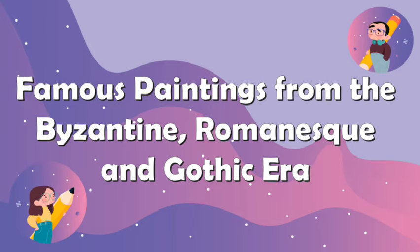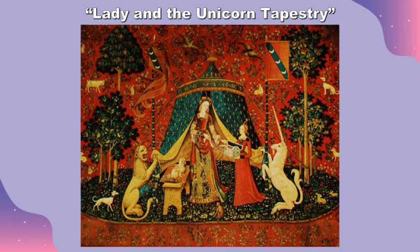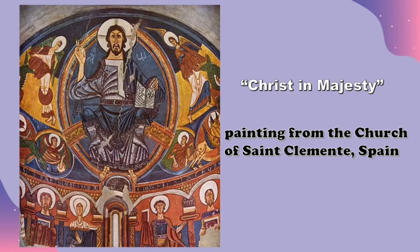Here are some paintings from the Byzantine, Romanesque, and Gothic era. The first is called The Shepherd David, which shows realistic details and naive naturalism. Second is Lady in the Unicorn Tapestry — subjects depict popular legends and love stories, with patterns like Mille Fleurs or Thousand Flowers showing influence possibly due to the Crusades. The last is Christ in Majesty, a painting from the Church of St. Clemente in Spain, where Christ wears a grayish-white robe with a blue mantle. Each side of the center window has three arches resting on columns with capitals in green, red, and black, with figures of the Virgin Mary and five saints, and columns with wavy vertical line patterns. This mural painting has been moved to Barcelona and replaced by a replica.